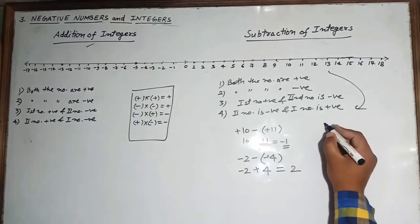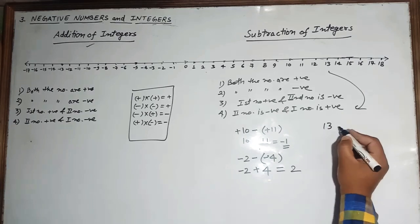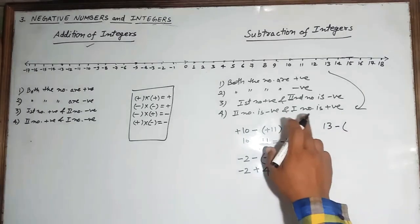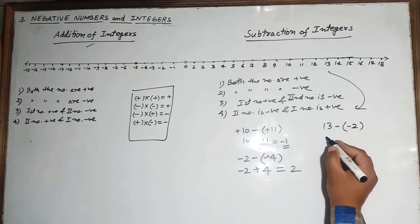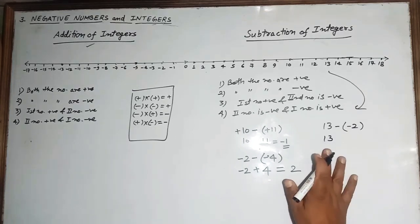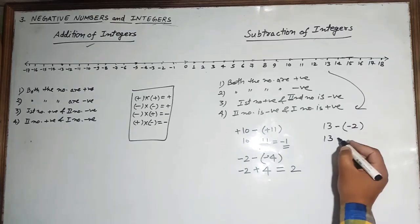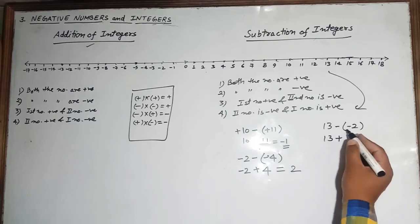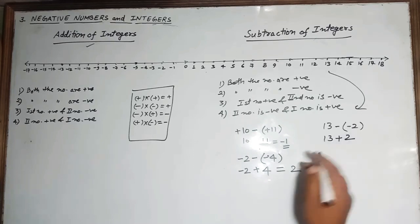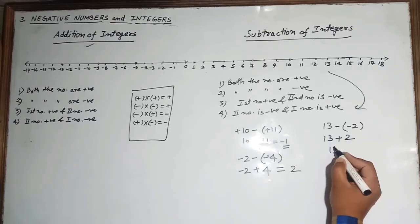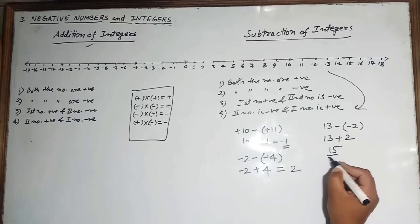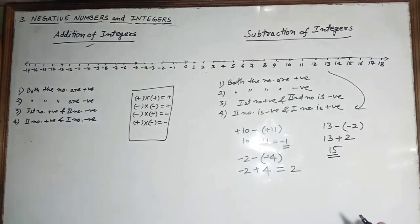Case 3 — first number positive and second negative: for example, 13 minus minus 2. Minus into minus becomes plus 2, so we get 13 plus 2 equals 15.